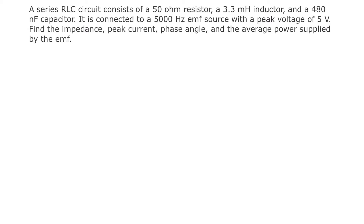Let's start off by finding the impedance of this RLC circuit. The impedance is essentially the net resistance of the RLC circuit, taking into account not only the resistance of the resistor, but also the so-called resistances of the inductor and the capacitor. For the inductor it's called inductive reactance, and for the capacitor it's called capacitive reactance. Combining those with the resistor's resistance gives us the total impedance.